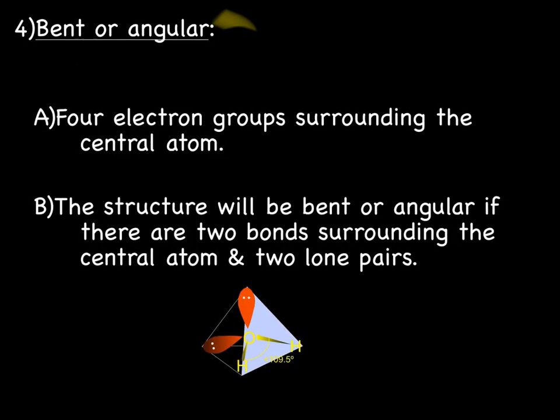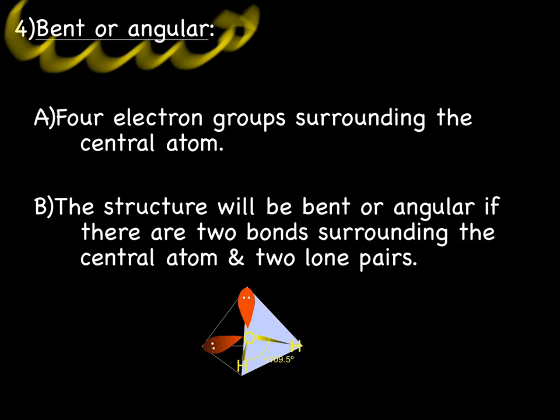And our next shape is called bent or angular. The bent or angular shape also has four electron groups surrounding the central atom. However, this time, the four electron groups are made up of two bonds and two lone pairs. So looking at our shape down below we have our oxygen hydrogen with two bonds to hydrogen and two lone pairs.